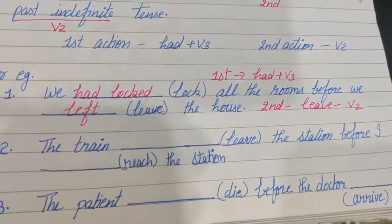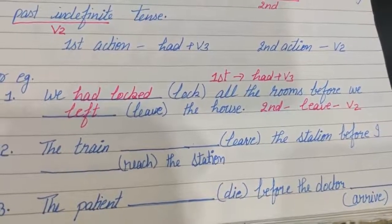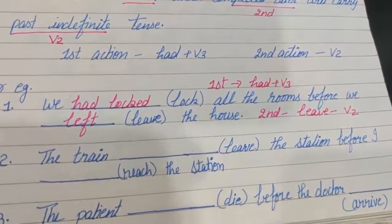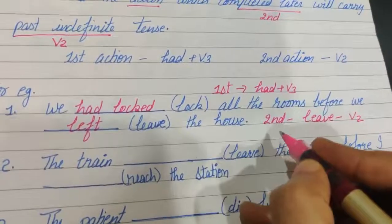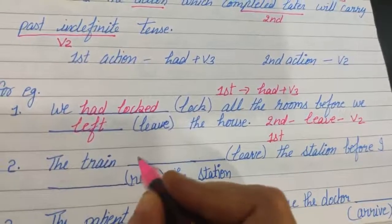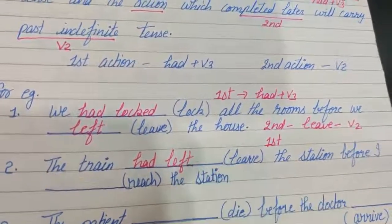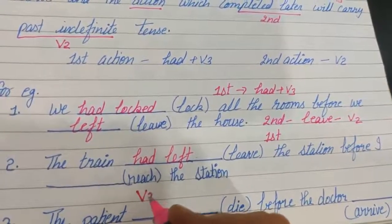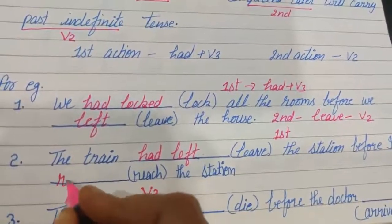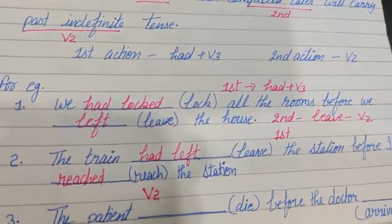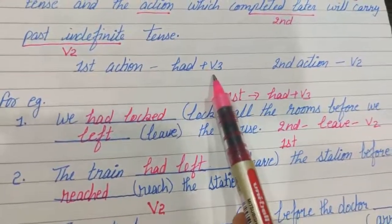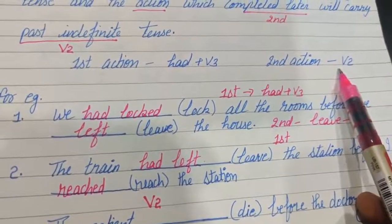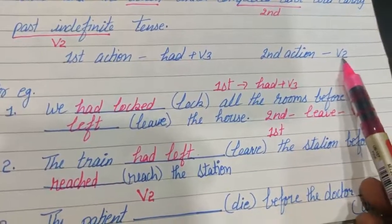Now see the second statement: The train — leave the station before I — reach the station. What happened first? Before I reached the station, the train had left. So this action took place first, so we use had plus V3. The train had left the station before I reached the station. That action took place later, so we use V2, and the answer becomes reached. For the first action use had plus V3, and for the action which completed later use V2.